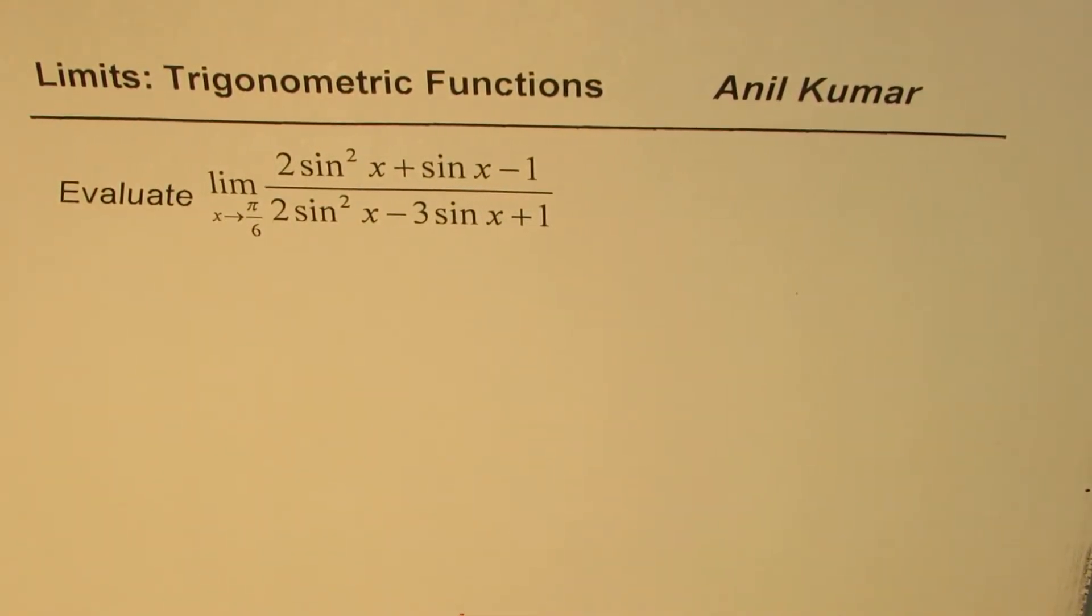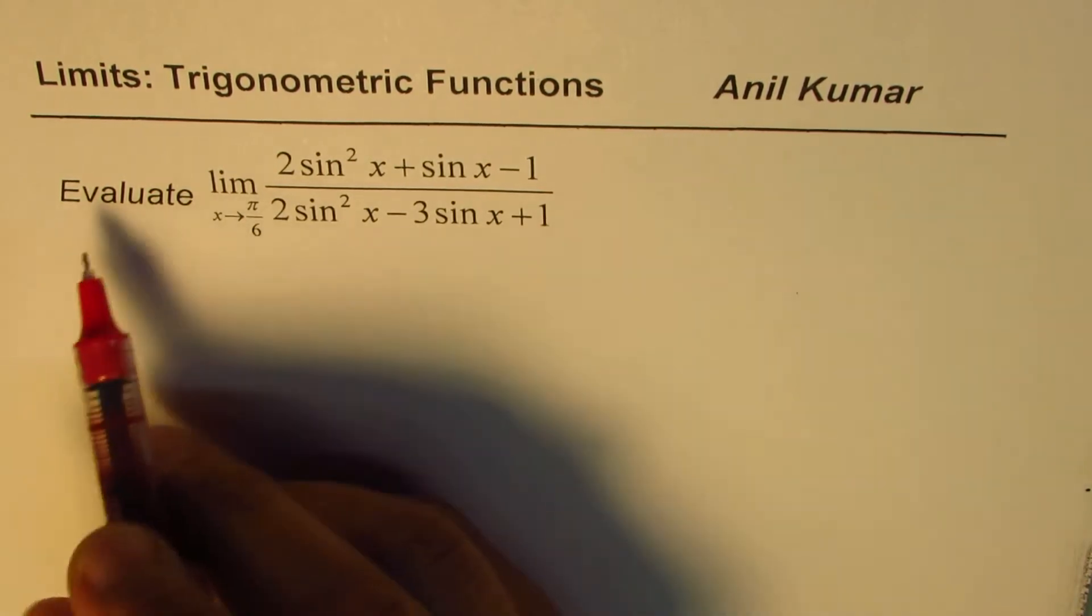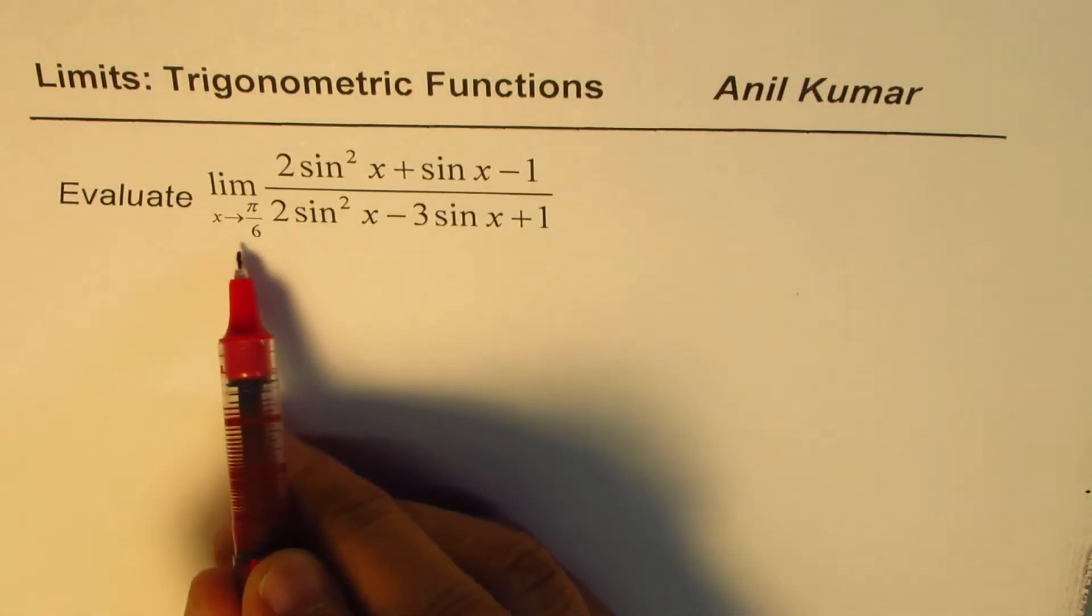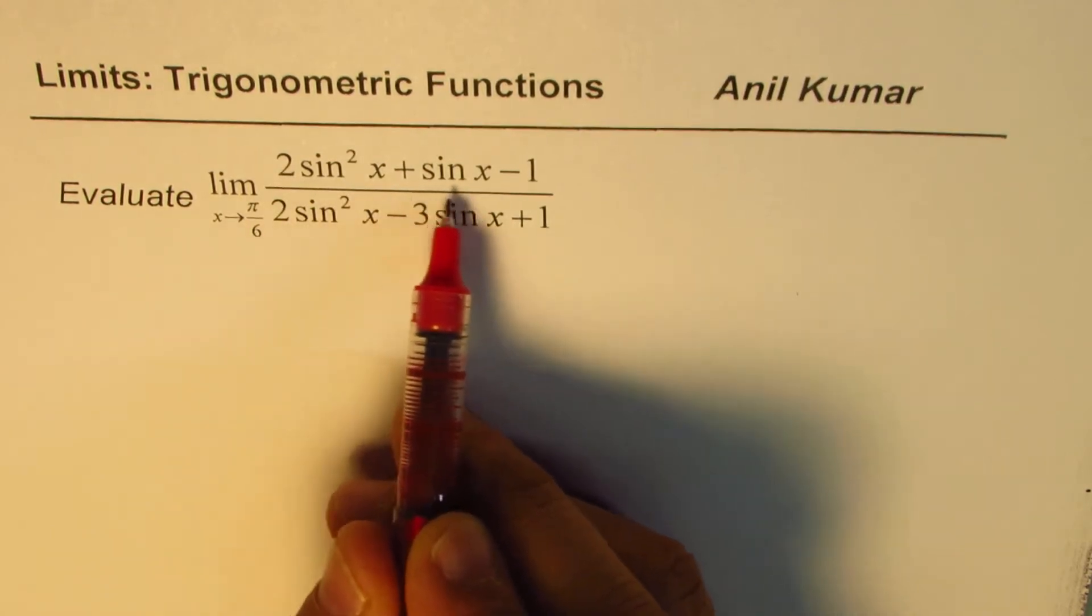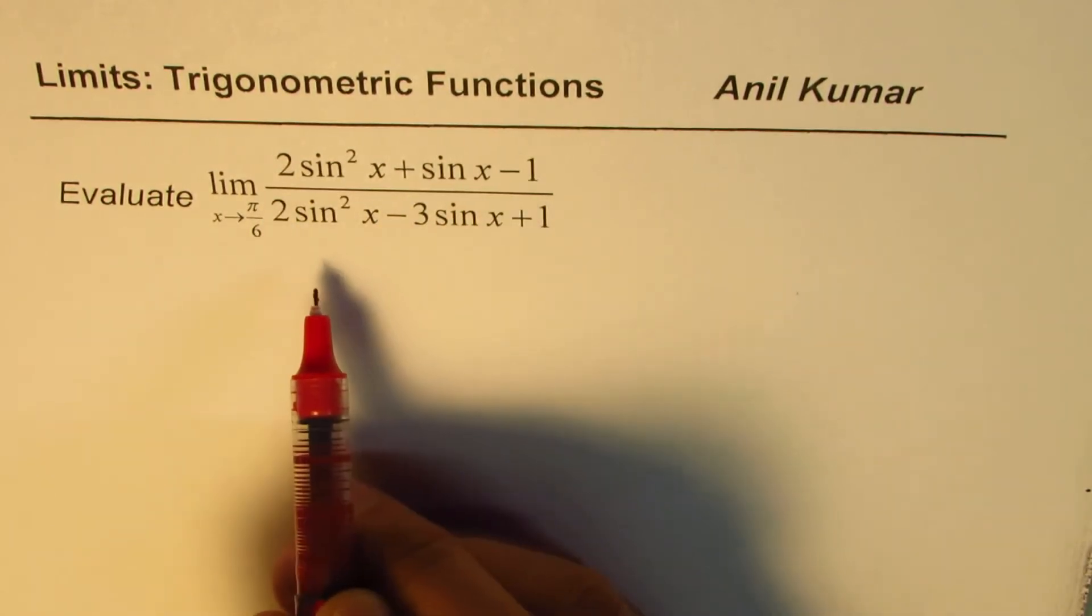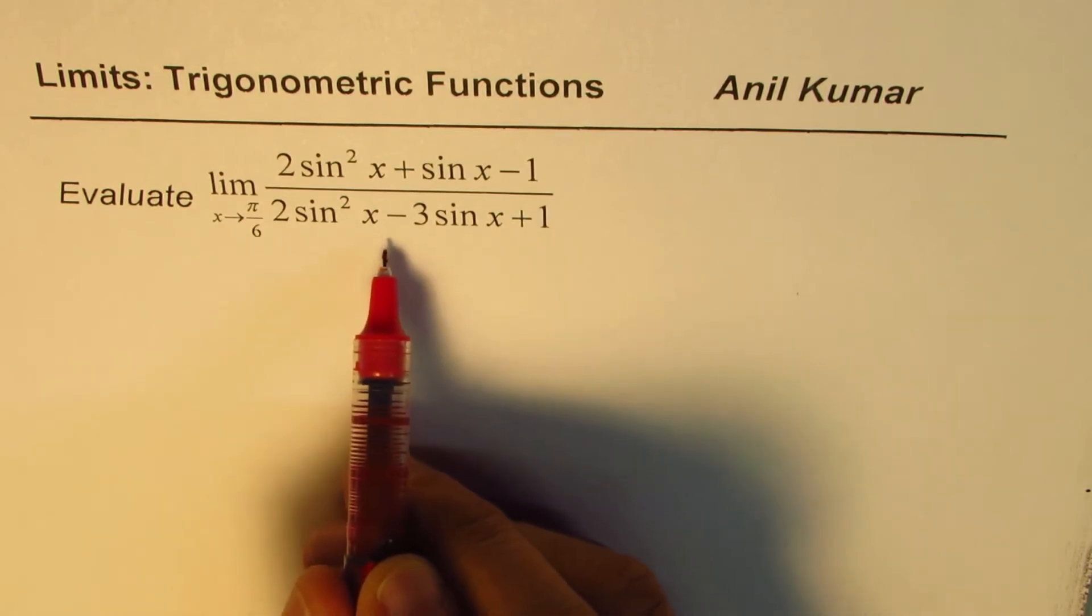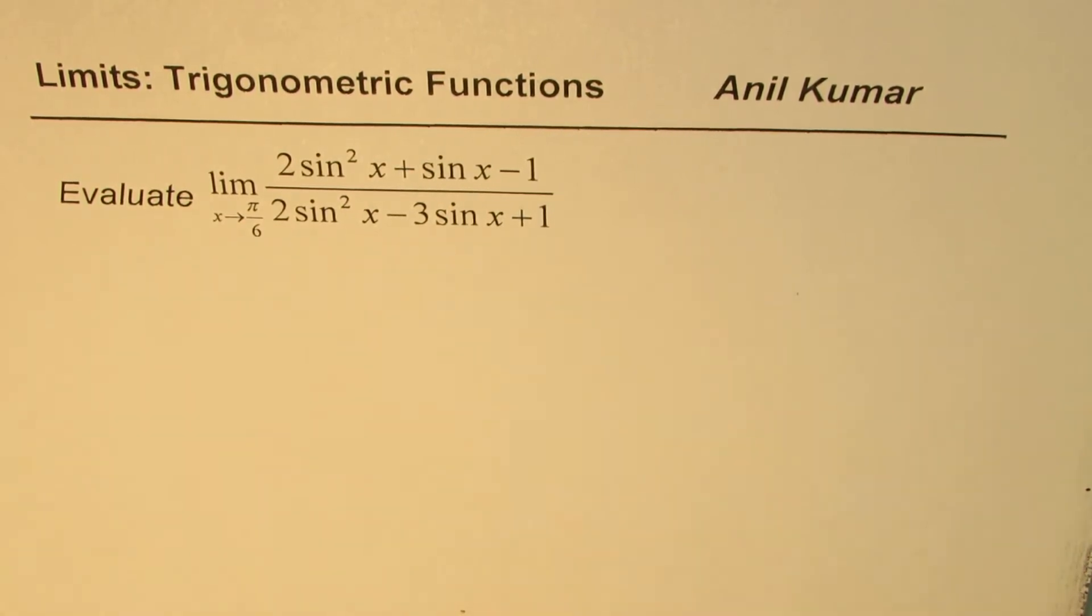I am Anil Kumar and in this video I will discuss how to find the limit of a trigonometric function which could be factored and then solved. The question here is to evaluate the limit when x approaches π/6 for (2sin²x + sinx - 1) divided by (2sin²x - 3sinx + 1).